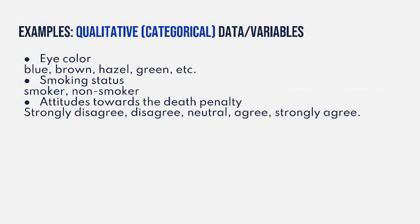Let me give you some examples of these. Qualitative categories: your eye color - blue, brown, hazel, green, etc. Those are categories you fit into. Your smoking status: are you a smoker or a non-smoker? You fit into that category. Attitudes towards the death penalty. You might fit into one of these categories: strongly disagree, disagree, neutral, agree, strongly agree. Another category you could fit into: your gender, or are you a freshman or sophomore? Those are different categories you fit into.